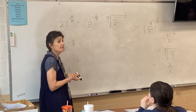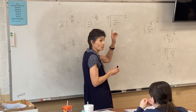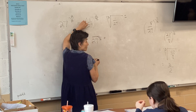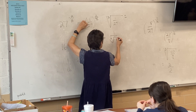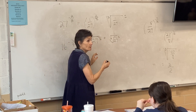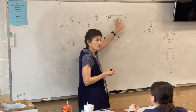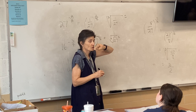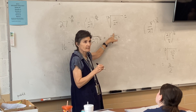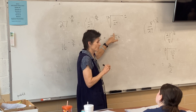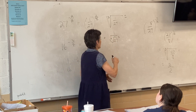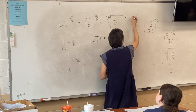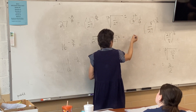It doesn't make any difference — you can do it either way. A student asks: can I make this one over 27 to the two-thirds? Yes, and that would be one over the cube root of 27 squared. The way I did it, I have a one up here — either way is fine. What's the cube root of one? One. So it doesn't make a difference. Either way we get one-ninth.